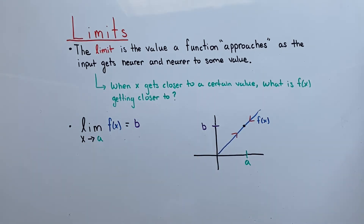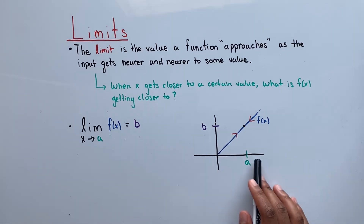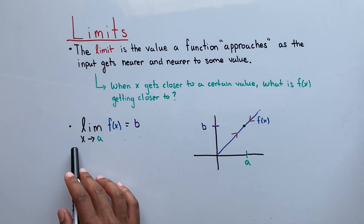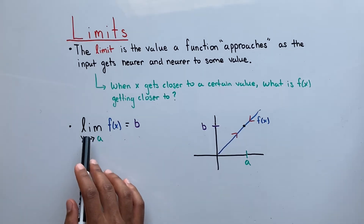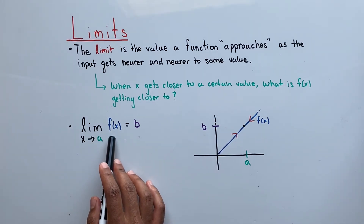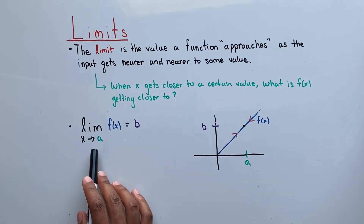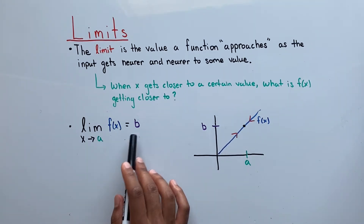When dealing with limits, we have to take into consideration the behavior of the function from both sides of our desired x value. Over here is a shorthand way of writing the limit: we have the limit of a function as x approaches some value equals its corresponding y value.